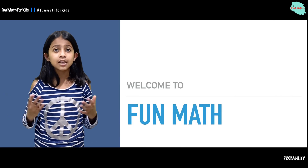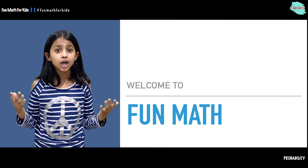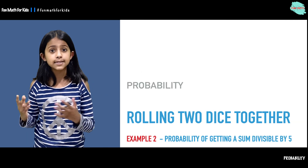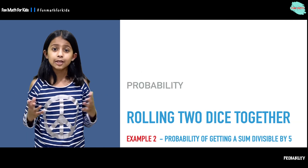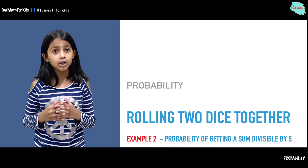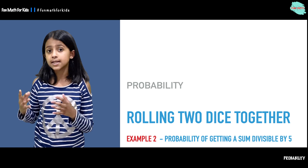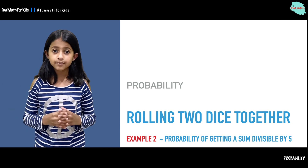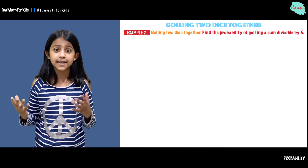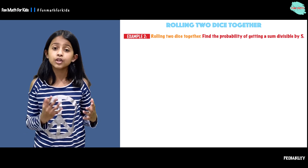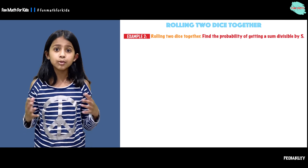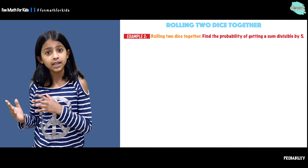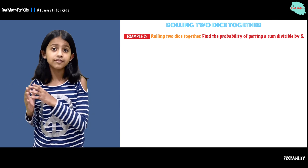Welcome to Fun Map! Today we will be continuing talking about probabilities. We will be rolling two dice together and talking about the probability of getting a sum that is divisible by 5. The problem we will be talking about today is rolling two dice together and finding the probability of getting a sum that is divisible by 5.